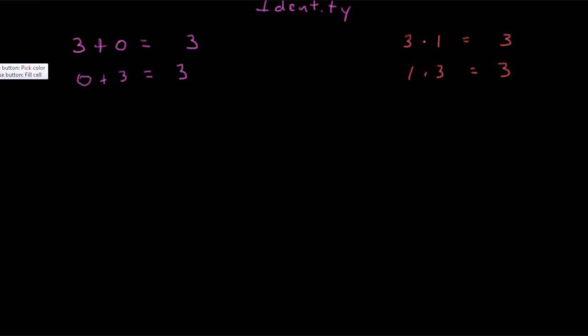Next property is the inverse property. And the inverse property is we would like to start out with a number and somehow get the identity element. So for addition, let's start out with 3 again. And we would like to somehow end up with the result of 0, which is the identity element. What would I have to add to that? Well, I could just add its opposite. 3 plus negative 3. And negative 3 is also called the additive inverse.